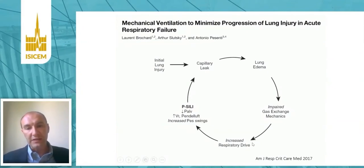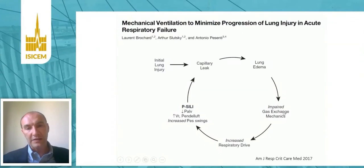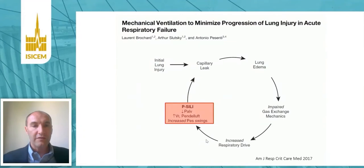Starting from the increased respiratory drive, the patient will develop higher tidal volume, higher transpulmonary pressure, and increased esophageal pressure swings. This will lead to capillary leak, which will increase lung edema, further impair gas exchange, further increase the respiratory drive, and again perpetuate this vicious circle, which will result in self-inflicted lung injury — a form of ventilator-induced lung injury.